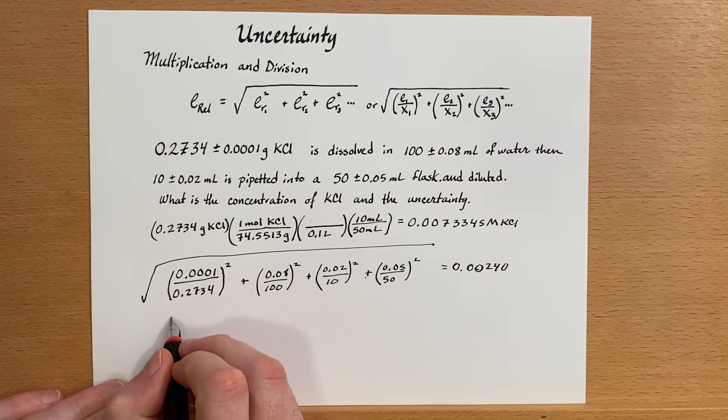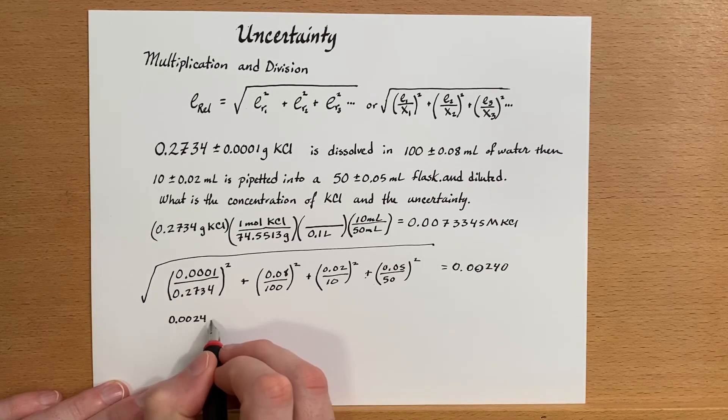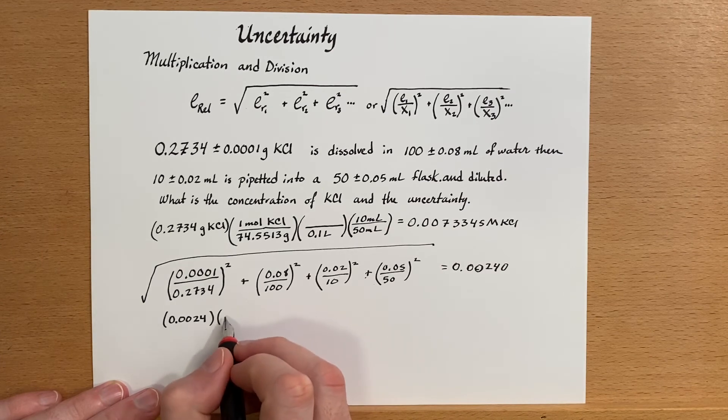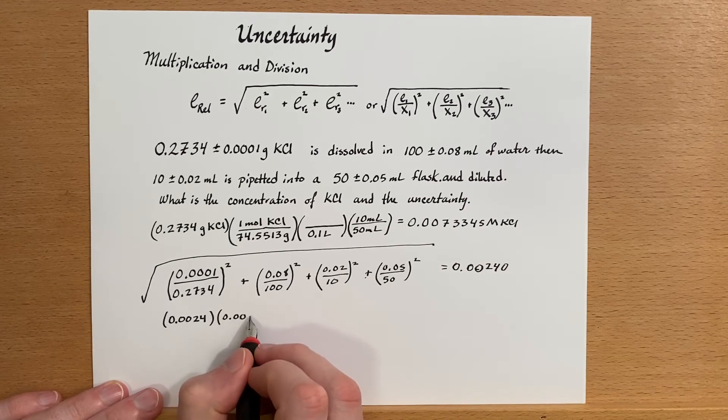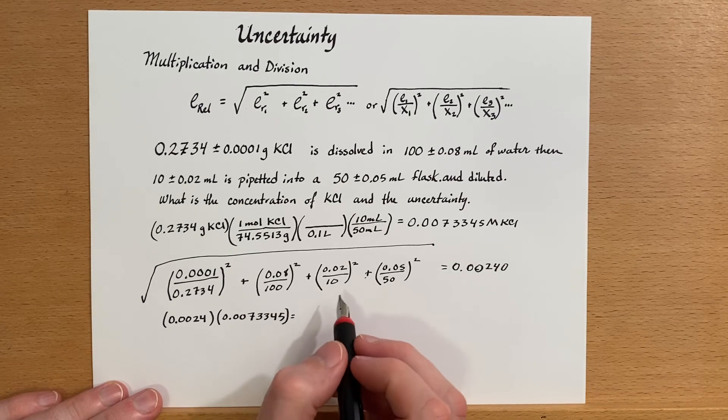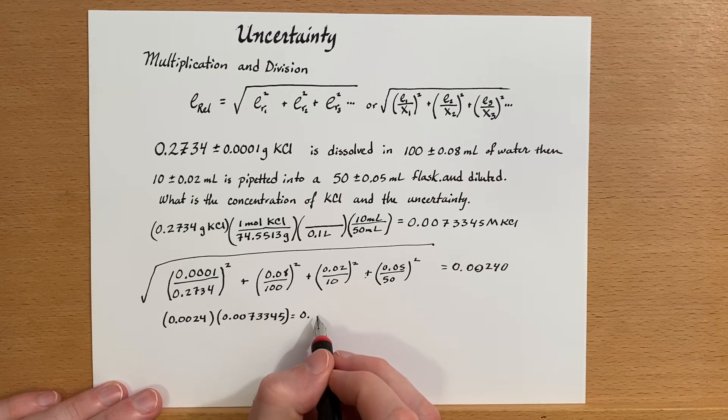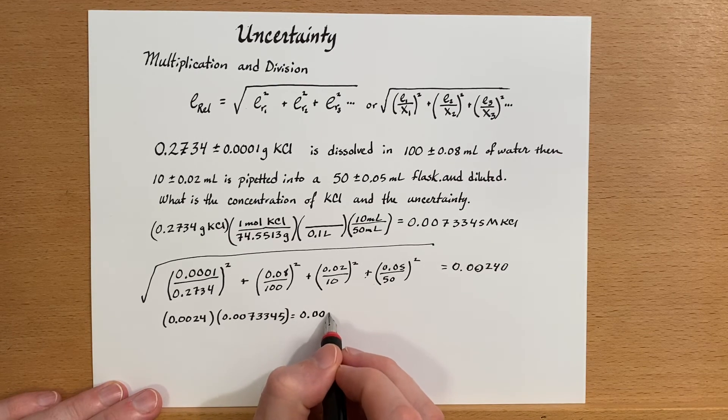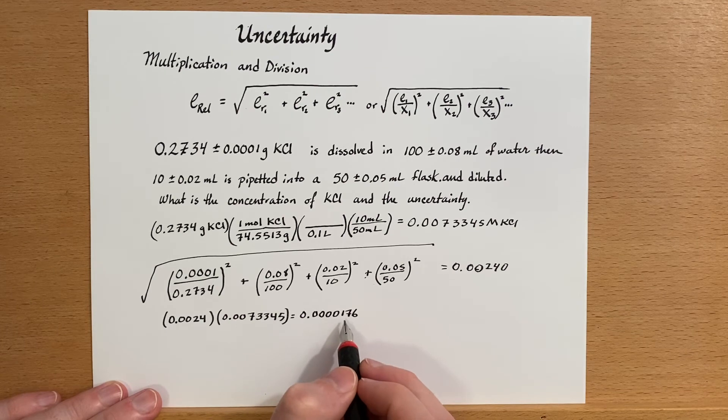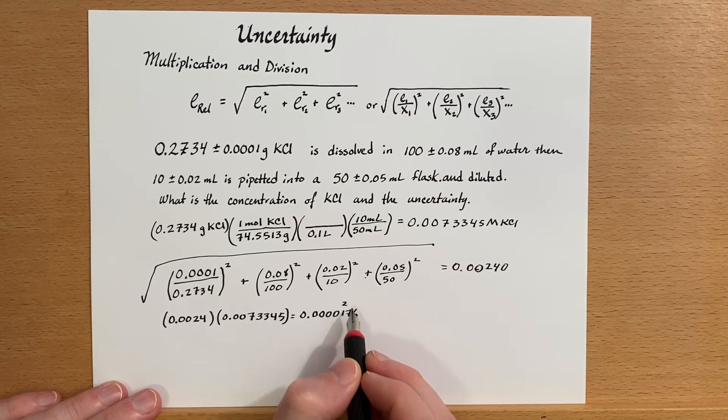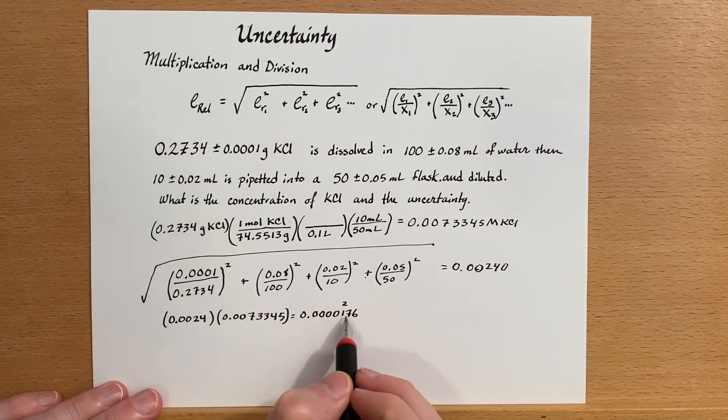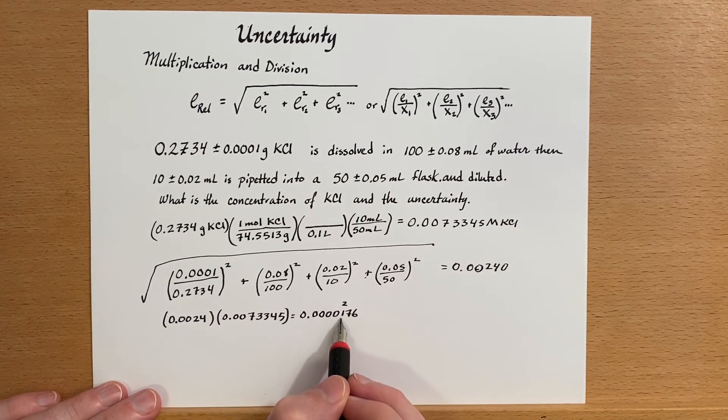And that's why I didn't immediately round this off to just one digit, because I'm going to use that number in a calculation. So I do this, and I'm getting 0.0000176, and in this case, I'm going to round that off to 2. So 0.00002. So I should write, let's see here, this answer, the error is starting at this digit right here.